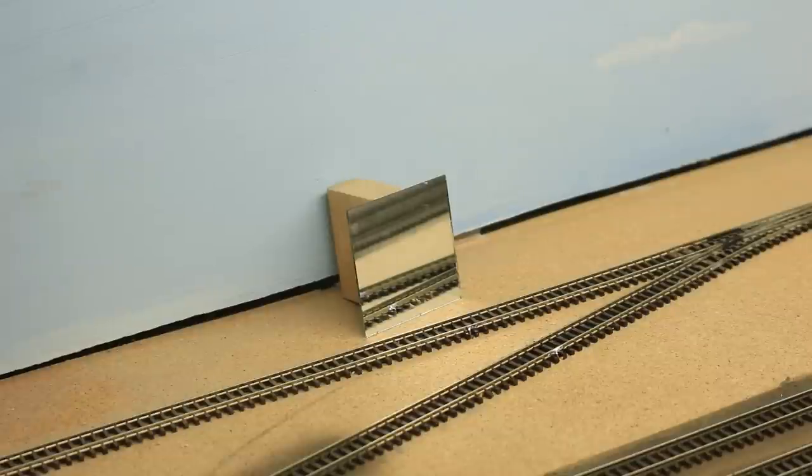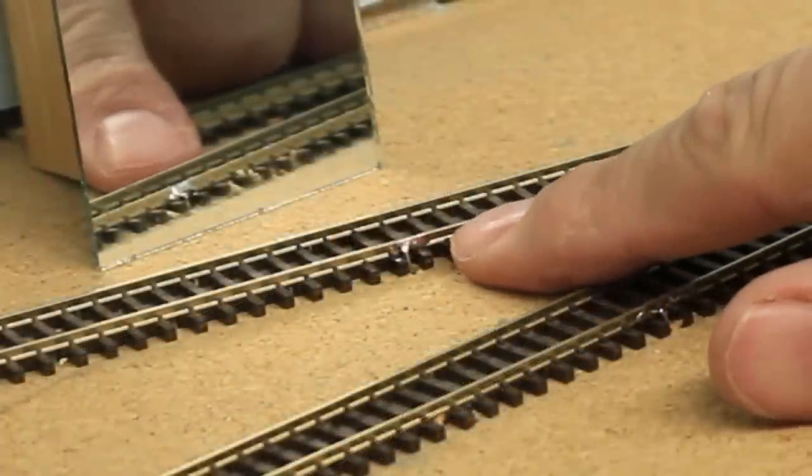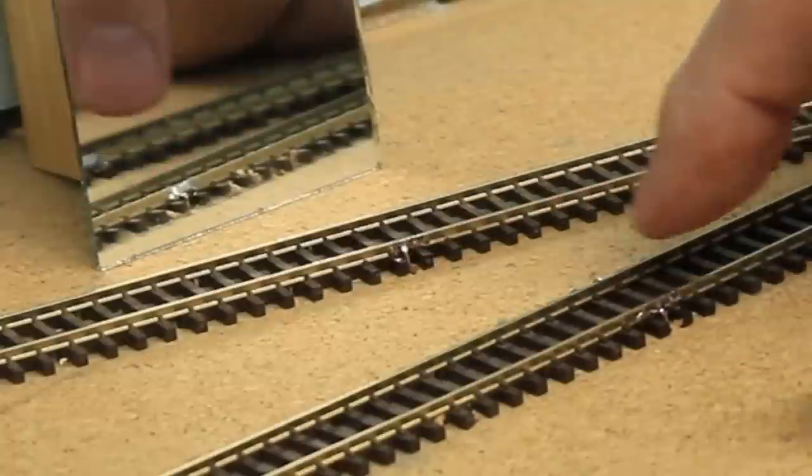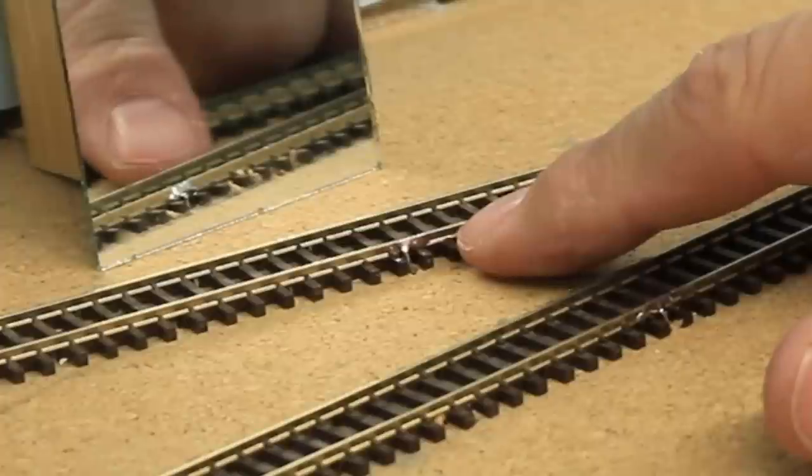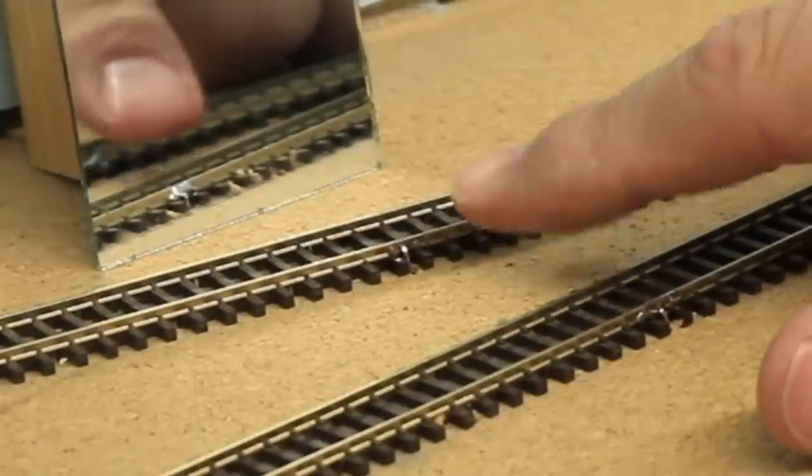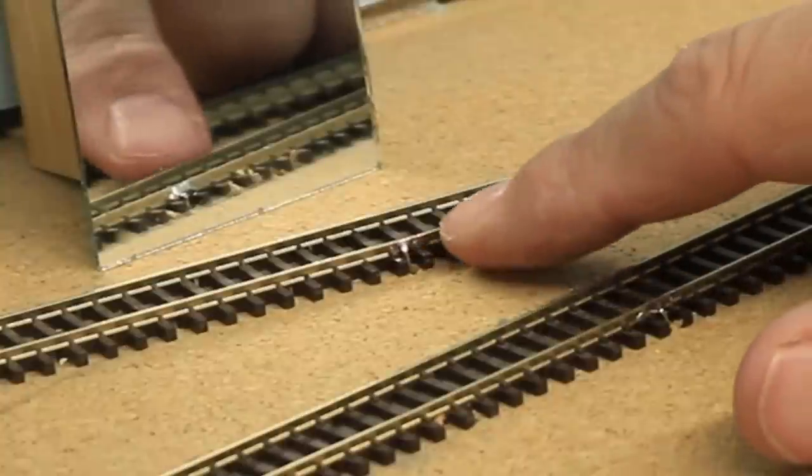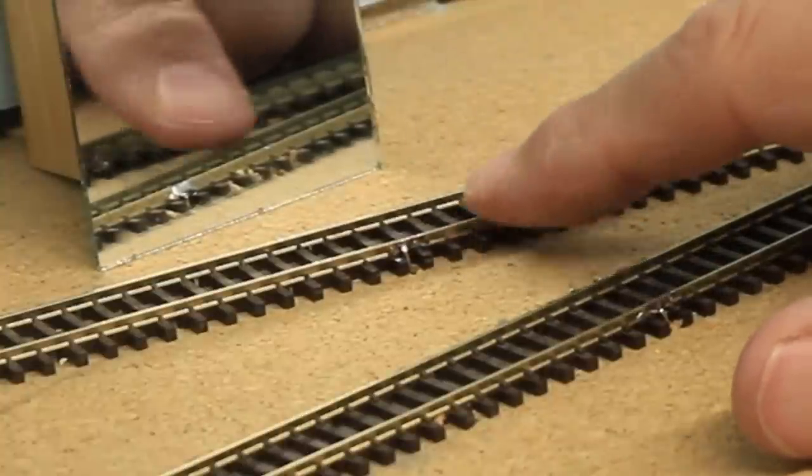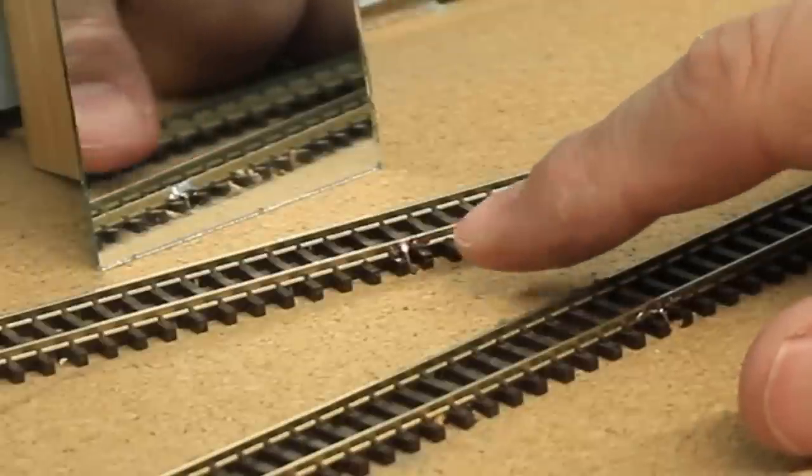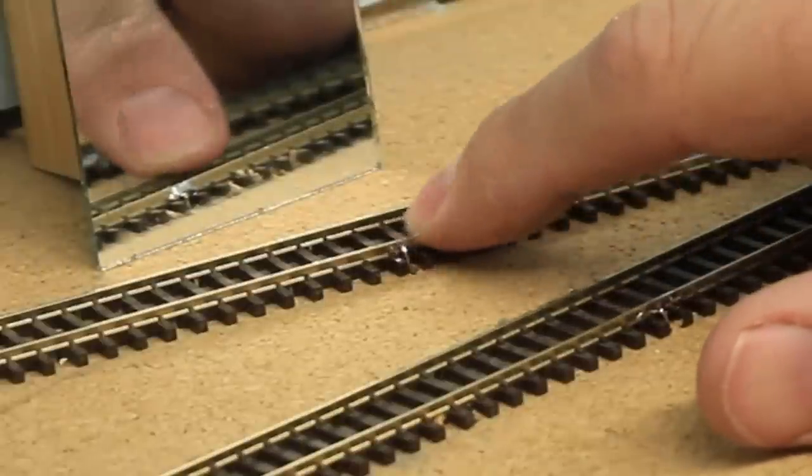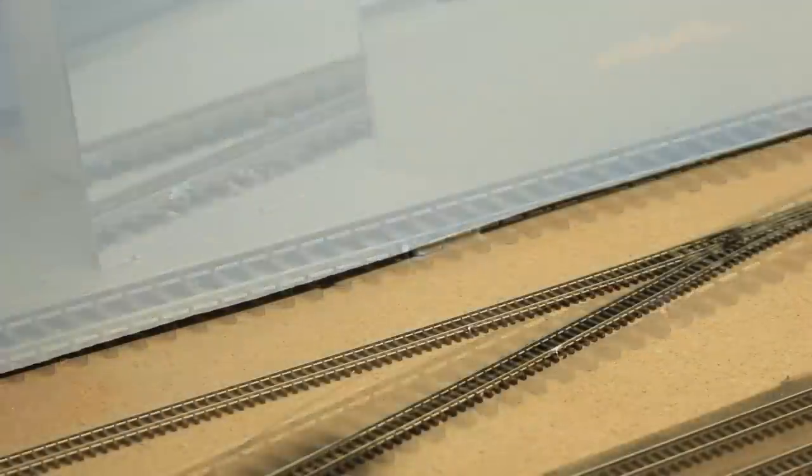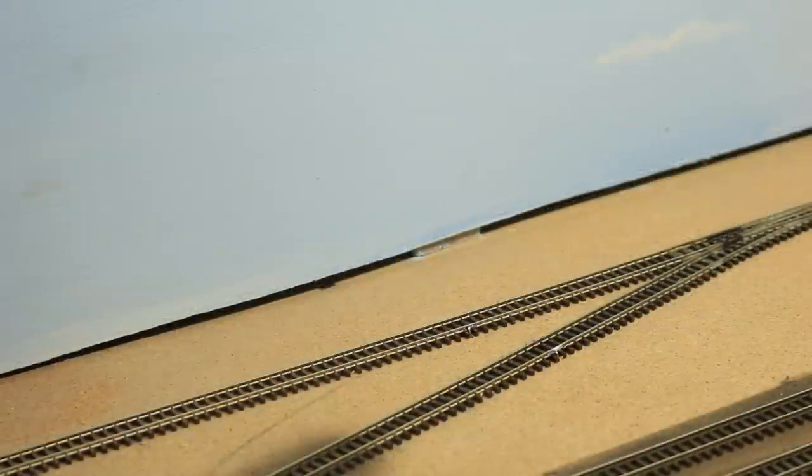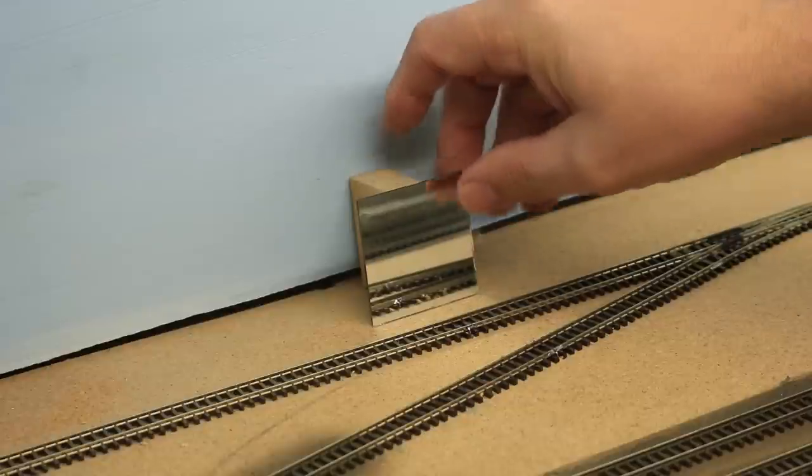Now, one of the things that is a test of a good solder joint is when it's done, it should be nice and shiny. And I hope you can see that in the camera there. It's a nice shiny joint there. This one's nice and shiny. If they're dull, then what you have is a cold joint, or sometimes it's referred to as a dry joint. It means that the solder did not adhere good to one or both pieces of metal. And that's a joint that's going to break and turn loose. If they're nice and shiny, that is one good indication that you have a good solder joint.